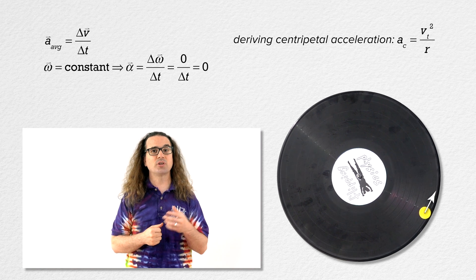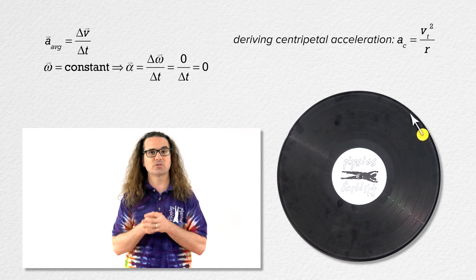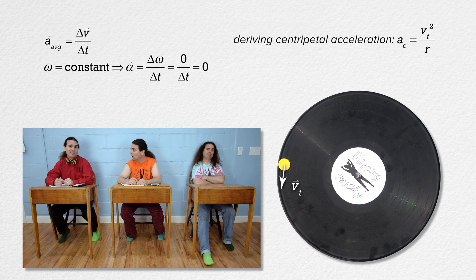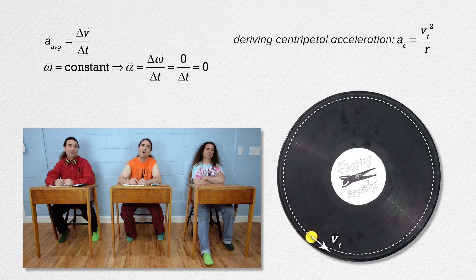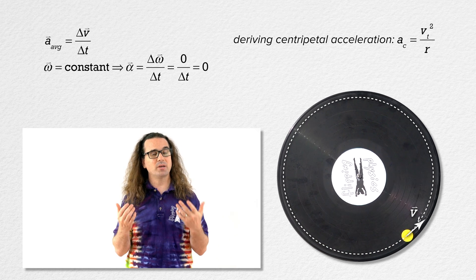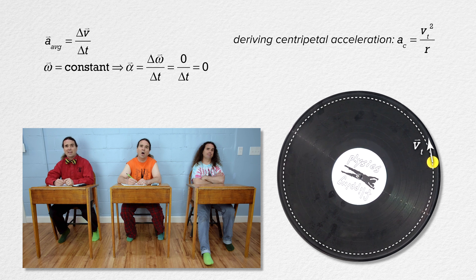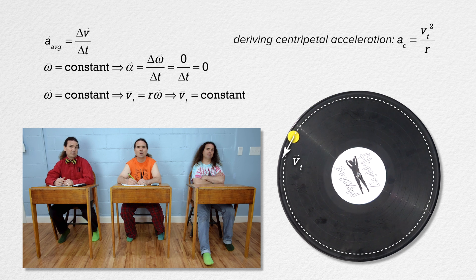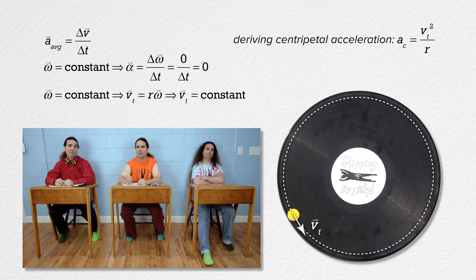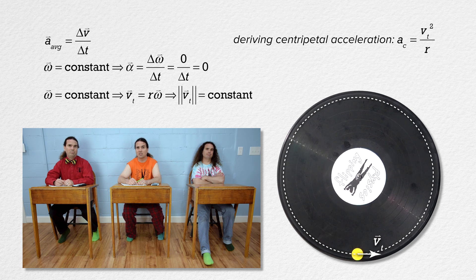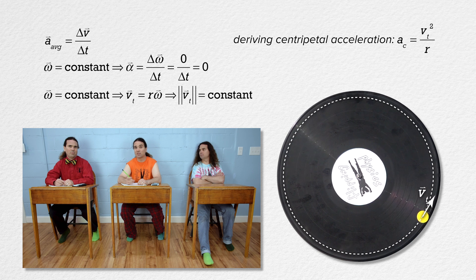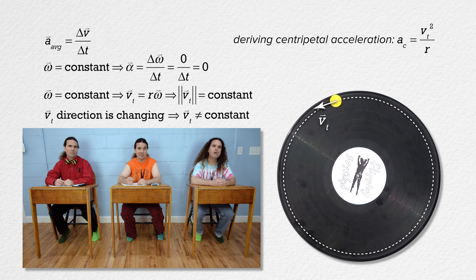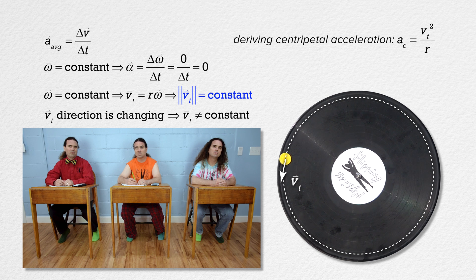Let's add the vector which shows the linear velocity of the chip as it moves along the circle. We call this the tangential velocity because it is always tangent to the circle described by the chip. The chip is moving with a constant angular velocity and tangential velocity equals radius times angular velocity, so the magnitude of the tangential velocity is constant. However, the direction of the tangential velocity is always changing, which means the tangential velocity vector itself is not constant.